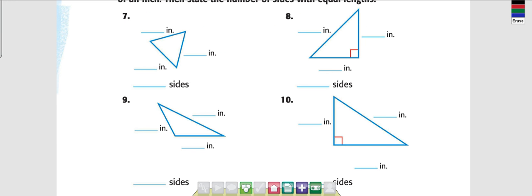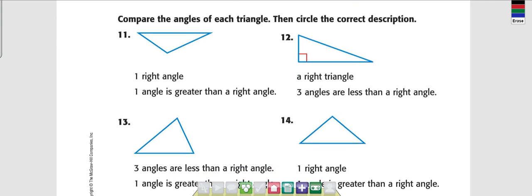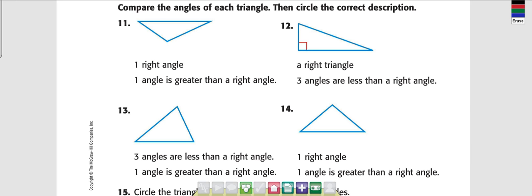Number 15 at the bottom says circle the triangles on this page that are right triangles. From 7, 8, 9, and 10 — which ones are right triangles? 8 and 10. Going down to 11, 12, 13, and 14 — which one is a right triangle? 12.